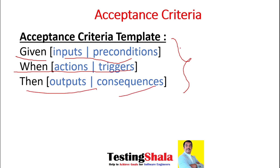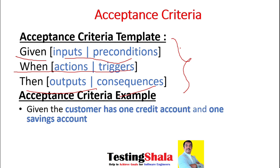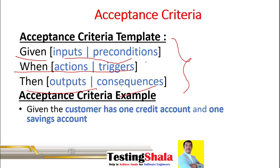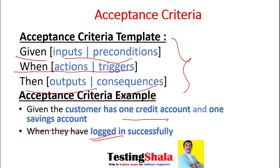Now let's understand the example of this acceptance criteria. Using the same online banking application: 'Given' the customer has one credit account and one savings account. 'When' the customer logs into the application successfully.